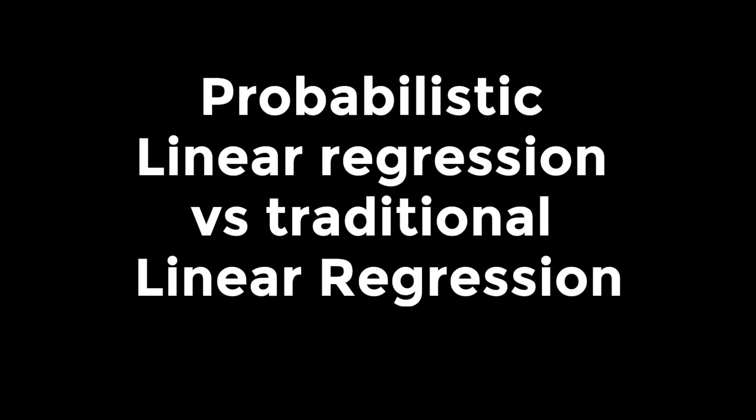In traditional linear regression, we would estimate the slope and intercept of the regression line based on the data and use these estimates to predict the income of a person based on their age.